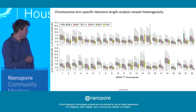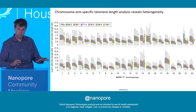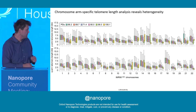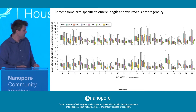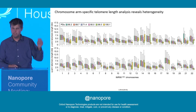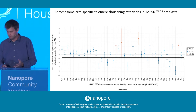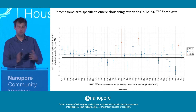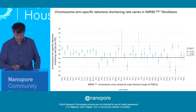Looking at the chromosome arm level, there is considerable heterogeneity, but telomere shortening over time is still evident. For example, chromosome 19p/q, shown at the bottom, has very short telomeres that are declining, while 18q has much longer telomeres that are also declining. Performing linear regression analysis on chromosome arm-specific telomeres reveals shortening rates between 12 and 64 bases per population doubling, consistent with the bulk analysis.